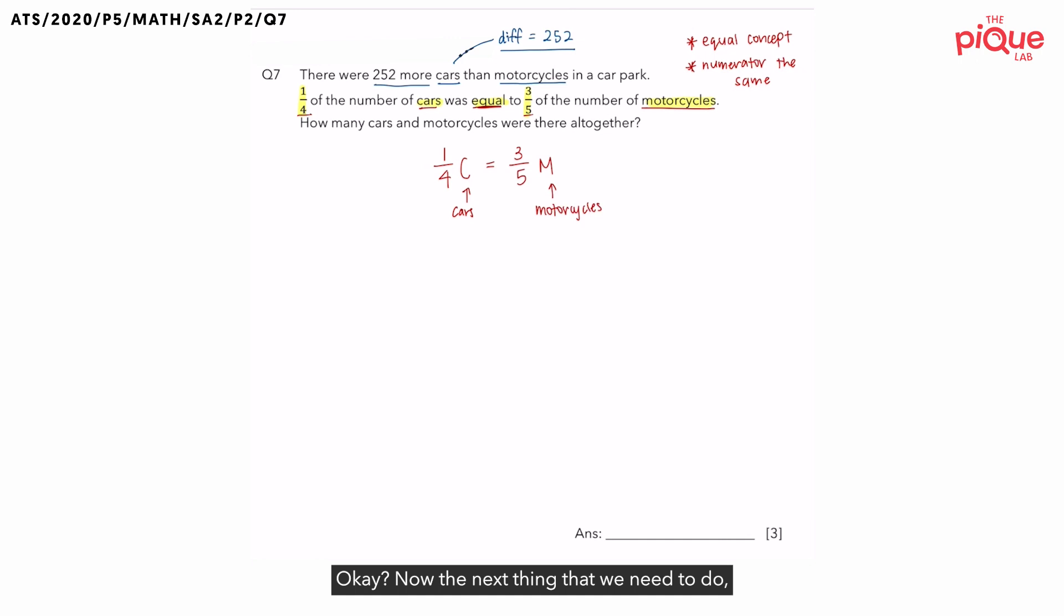Now, the next thing that we need to do, because this is called the numerator the same concept, let's analyze the two numerators. I have 1 on my first fraction and 3 on my second fraction. How can we make both of them the same number?